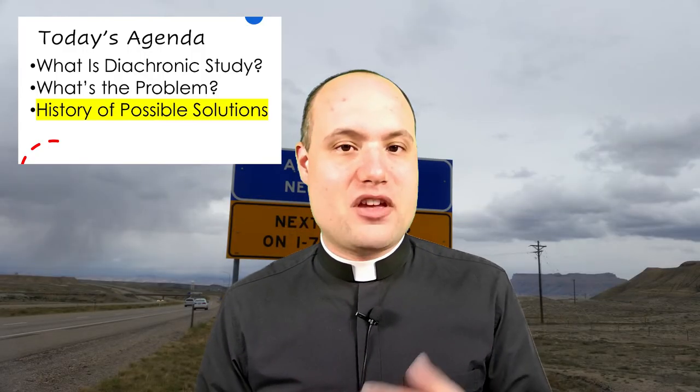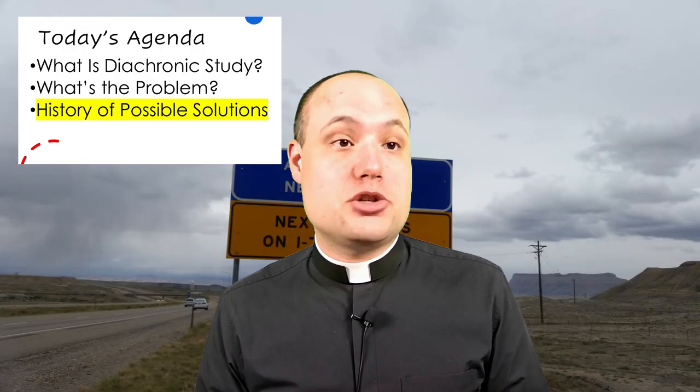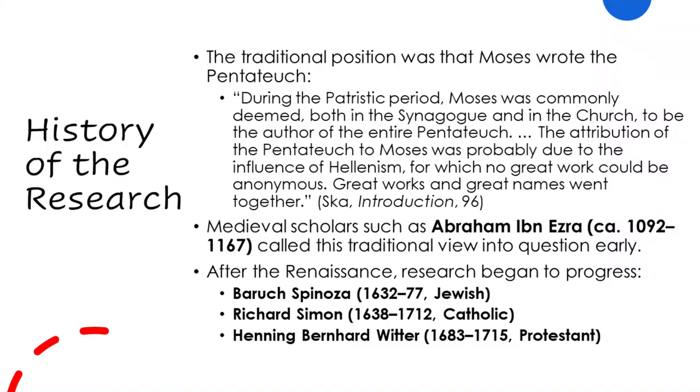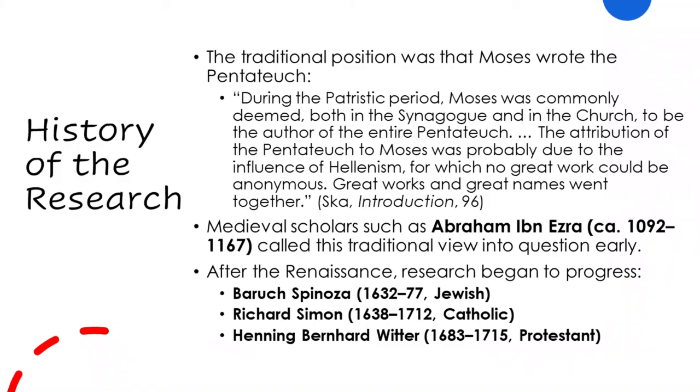Scholars having faced these problems began to propose a number of different solutions, some going back even to the Middle Ages. The traditional position that Moses wrote the Pentateuch — which we think incidentally came because of Hellenistic culture, where Greek culture of the third century BC held that for a work to be great it had to have a great author — starts to be displaced already by Abraham Ibn Ezra in the Middle Ages.